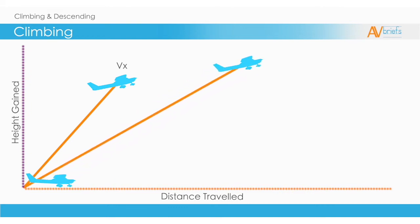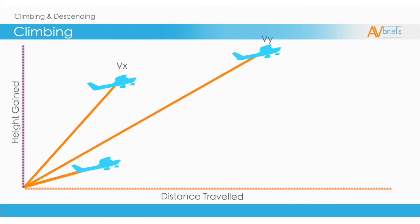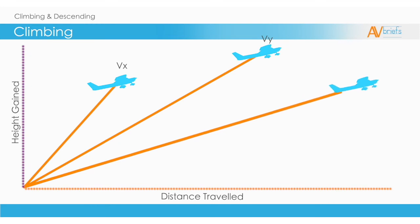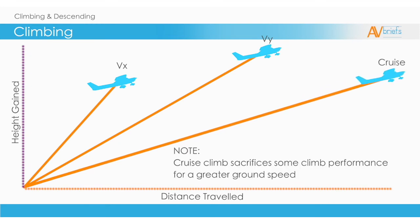Cruise climb sacrifices some climb performance for a greater ground speed. So if you need to get to where you're going as fast as possible — and most flights do want that — then you would use a cruise climb.